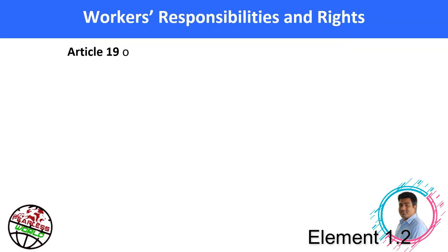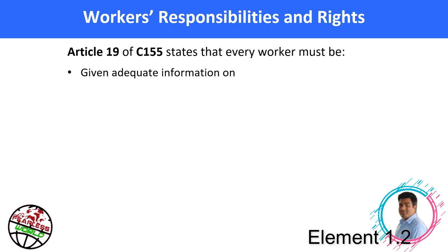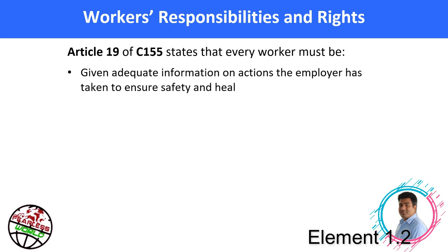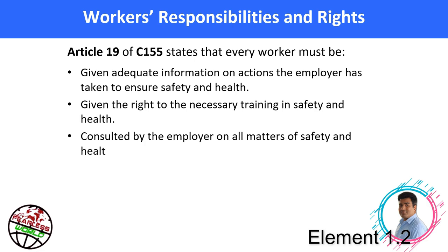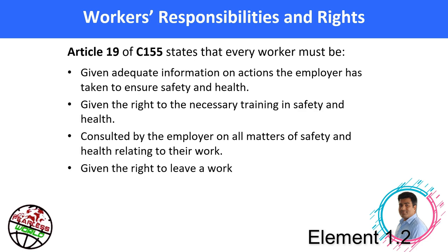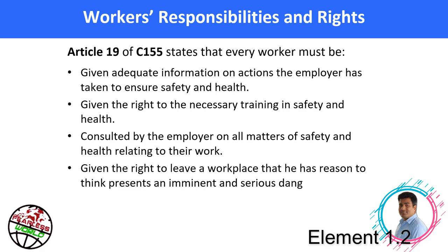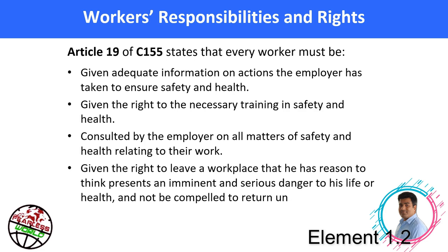Article 19 of C-155 also states that every worker must be: given adequate information on actions the employer has taken to ensure safety and health; given the right to the necessary training in safety and health; consulted by the employer on all matters of safety and health relating to their work; and given the right to leave a workplace that presents an imminent and serious danger to their life or health, and not be compelled to return until it is safe.